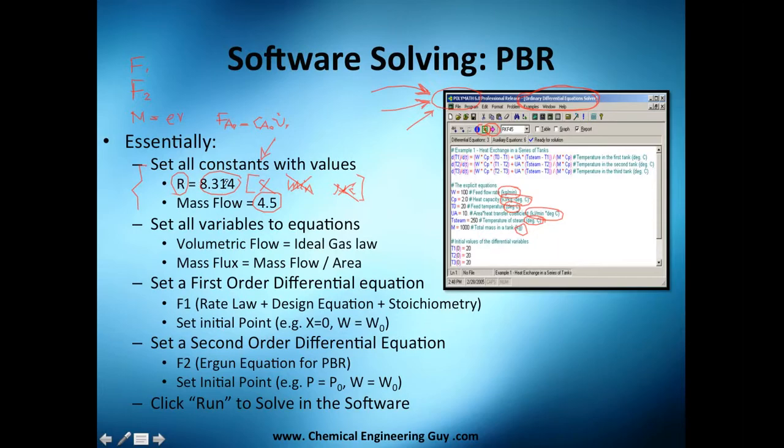Then we continue. We're going to set all the variables to equations. So first one was variables to constants or numbers. Now we're going to change it to changing numbers. Because, for example, the pressure is going to change. And what happens when the pressure changes, we have a change in the volume or temperature of ideal gas.